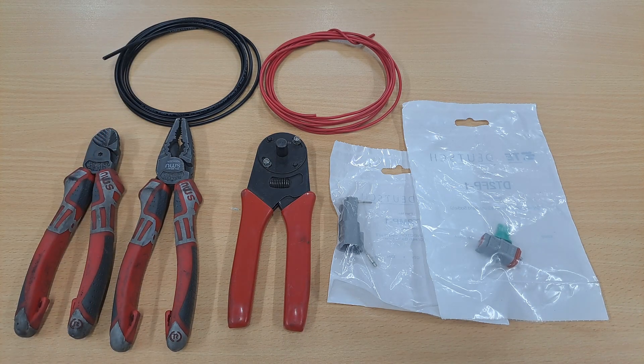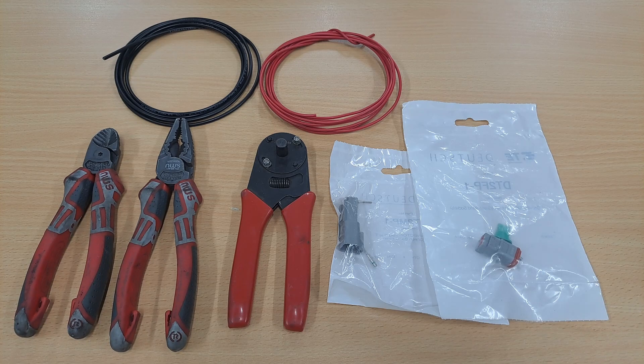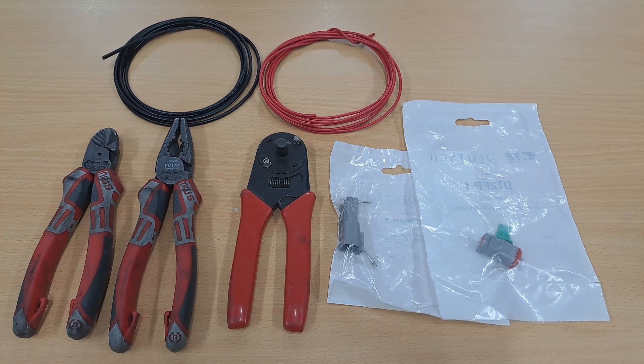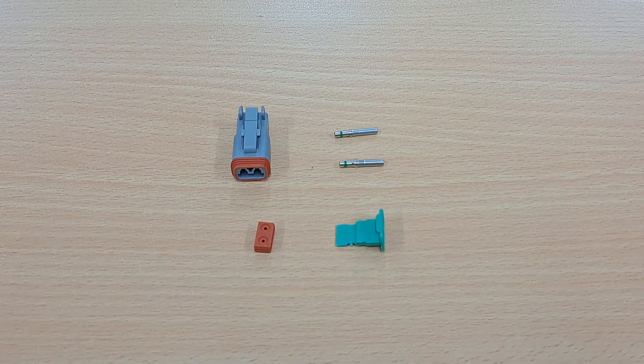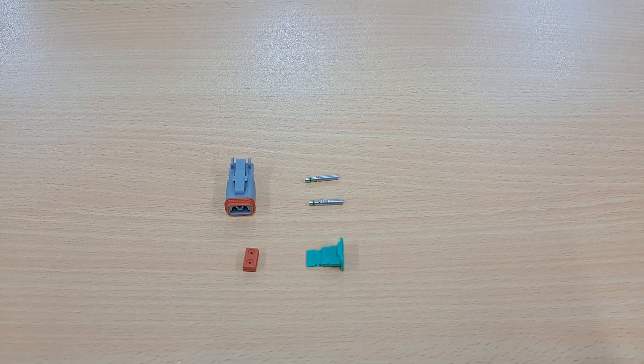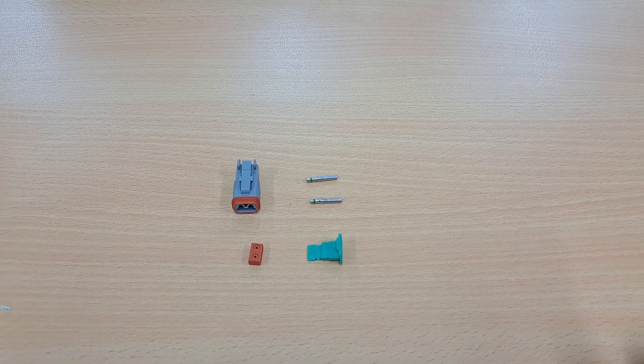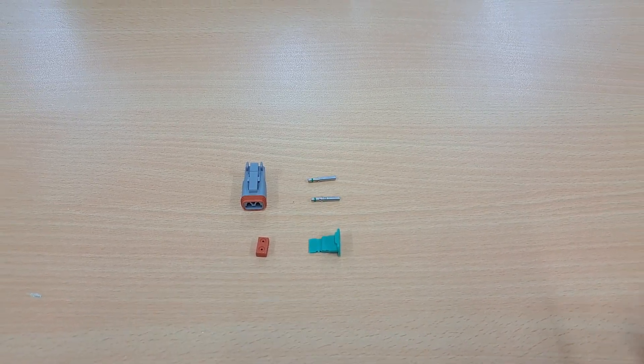We've got some wire here as well and today we're using 1.5 mil or 14 American wire gauge but you can use somewhere between 1 and 2 mil for this kit. We're going to start with the female part of the plug. This is just a two pin plug and we're going to start with the rubber seal and thread the cables through the rubber seal.